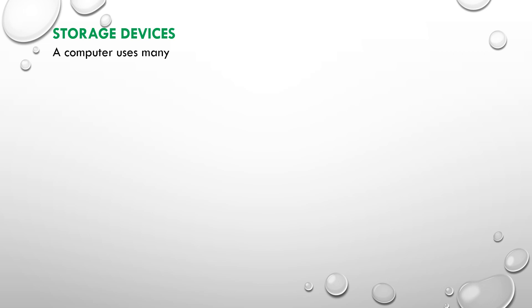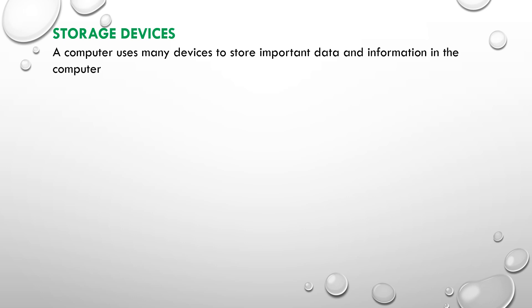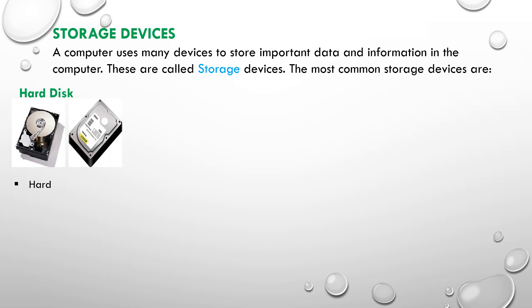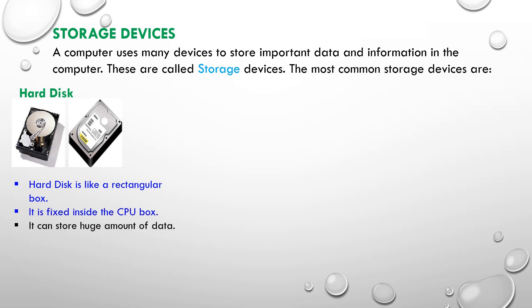Storage devices. A computer uses many devices to store important data and information. These are called storage devices. The most common storage device is the hard disk. Hard disk is like a rectangular box. It is fixed inside the CPU box. It can store a huge amount of data. Hard disk is also called hard disk drive, or HDD.